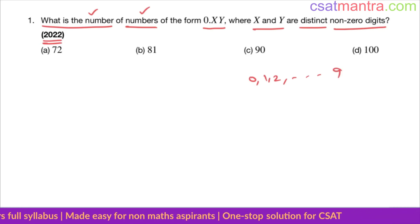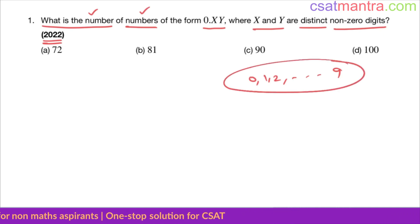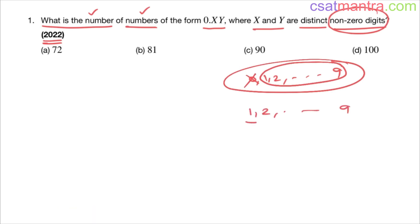Now we are talking about non-zero digits. Non-zero, so zero is not included. So we have nine digits, nine non-zero digits. See, we are talking about count here and the count is quite big. We can do it manually or the best way is use permutation.